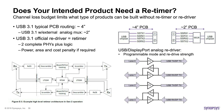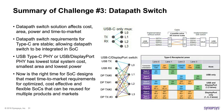The summary of the data path switch challenge: the data path switch affects cost, area, power, and time to market. Even as specifications evolve, the data path switch requirements are stable, allowing integration into the SOC. A USB Type-C PHY or USB DisplayPort PHY has the lowest total system cost, smallest area, and lowest power. Now is the right time to start SOC designs that will meet time-to-market requirements for optimized, cost-effective, and flexible SOCs that can be reused for multiple products and markets.